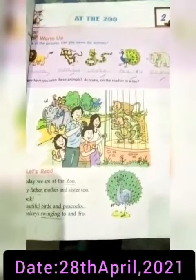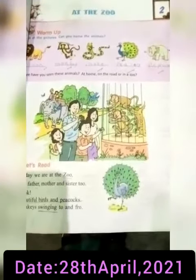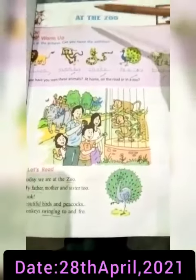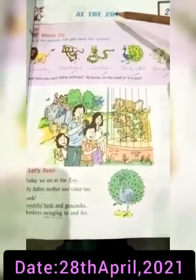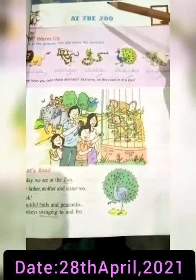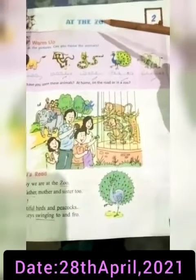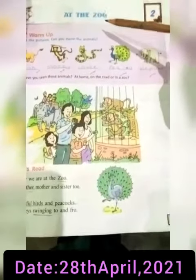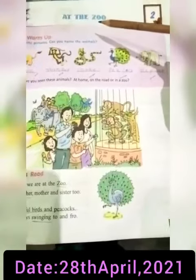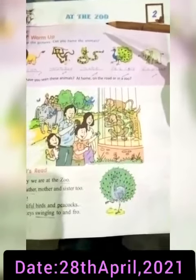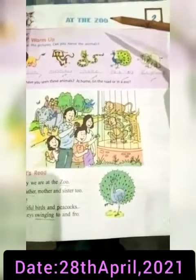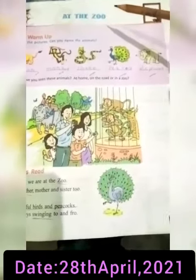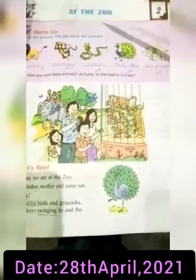Asalamu alaikum my dear students, hopefully you are fine and healthy. This is your English class and I'm your English teacher. Chapter number two: At the Zoo. Zoo is the place where so many animals are living. It is a visiting place — a place for sightseeing. Have you seen the zoo? Tell me yes or no.